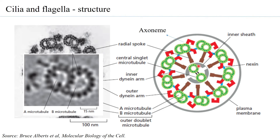The two central singlet microtubules are covered by a complex protein structure called the inner sheath. Radial spoke proteins extend from the peripheral doublets and bind to this inner sheath. This elaborate cross-sectional organization means the molecular mechanism enabling movement involves all these complex proteins working in tandem to produce the bending and whip-like motion of cilia and flagella.